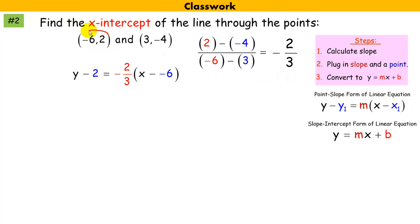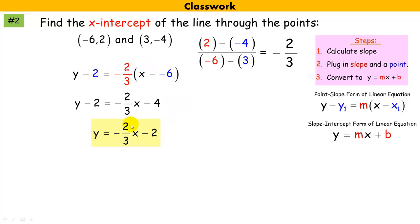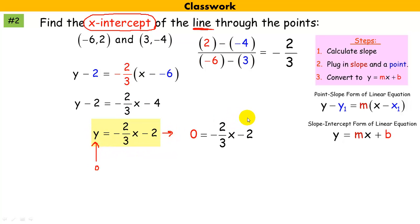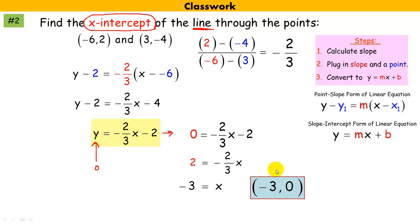I select one of the points and plug it into point-slope form with the slope — x and y values go into their respective positions. After distributing and adding 2, I have the equation of the line. To find the x-intercept, I set y equal to 0 and solve for x. I add 2 and multiply by the reciprocal to get x equals negative 3. As a point, the x-intercept is (−3, 0).